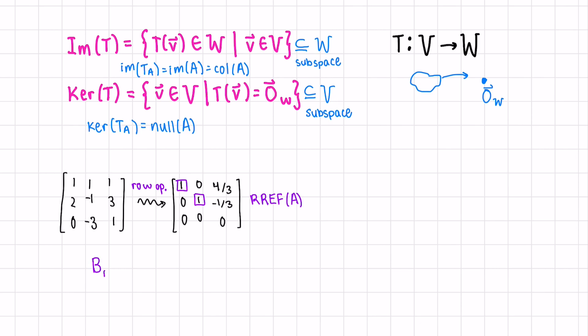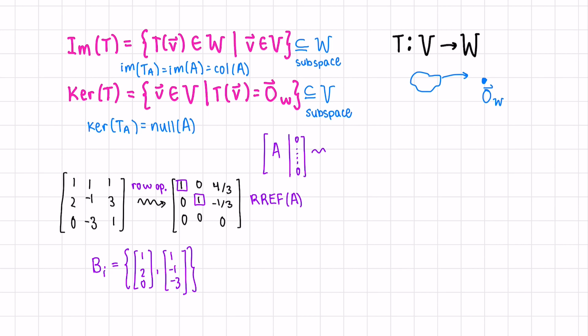So the basis of the image would be the first two columns of our original matrix. On the other hand, the basis of the kernel is all solutions to the homogeneous system. That means we have our matrix A with a zero column, which we don't have to write because it's not affected by row operations. We convert to reduced row echelon form. If we have any non-leading columns, these solutions form the basis of the kernel of the transformation, or the null space of the matrix.